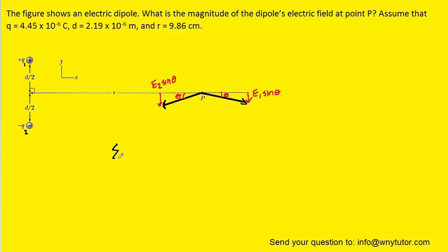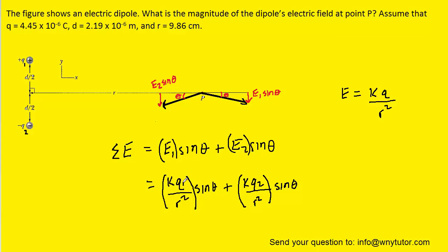Now when we go to write out the total electric field, which we can symbolize as sigma E, we're simply going to add these two Y components together. So we're going to have E1 sine theta plus E2 sine theta. We recall that E is equal to KQ divided by R squared, so we're going to fill that in for E1 as well as for E2. The magnitude of the charge Q1 and the magnitude of the charge Q2 are the same, so we can see we have two like terms and this can be condensed to 2KQ sine theta over R squared.